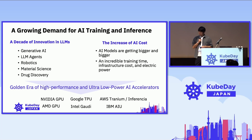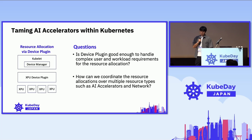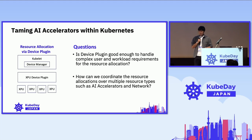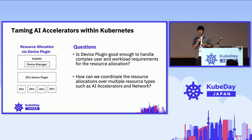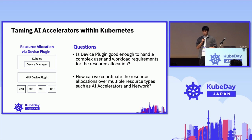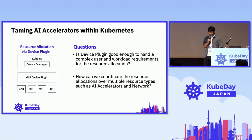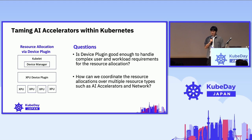That's a brief overview of the motivation. We all love Kubernetes, so let's jump into the world of Kubernetes. How can we deal with AI accelerators within Kubernetes? The device plugin is there — it provides solutions to expose custom AI accelerators to your pods. You develop your own device plugin and export all the resources through Kubernetes. That's good enough to just use accelerators, GPUs, or whatever. But the question is: is device plugin really good enough to handle all complex user workload requests for resource allocations?